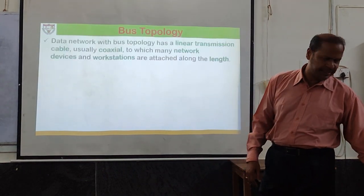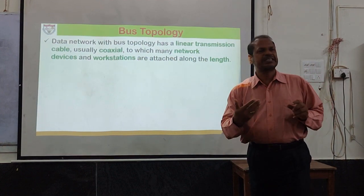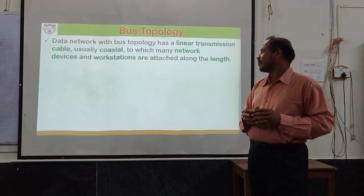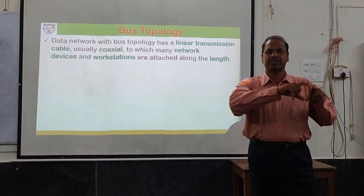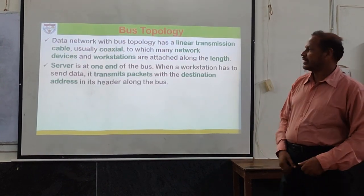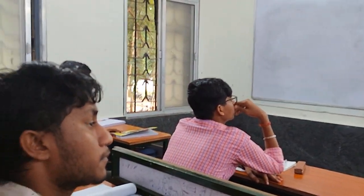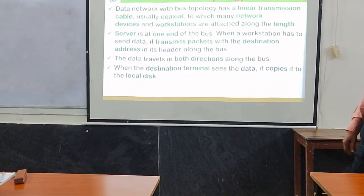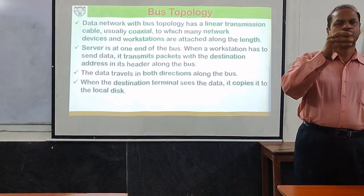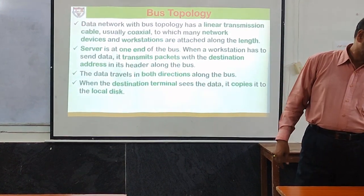In bus topology, a linear transmission cable runs through the network — typically a coaxial cable. Different network stations are connected throughout this cable. The server is at one end of the bus. When a workstation has data to send, the packet travels from source to destination in both directions along the cable. Once the data reaches the destination, the destination terminal copies it from the network.